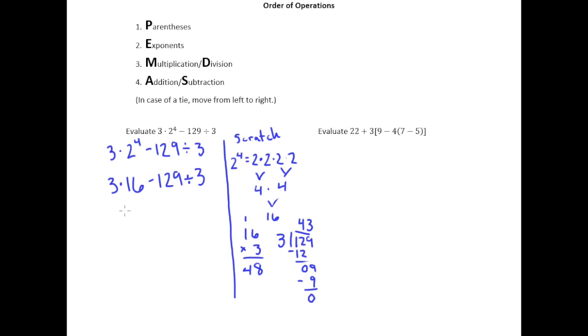So we can replace 3 times 16 with 48 and 129 divided by 3 with 43. And then we can subtract these. And we know that 48 minus 43 is 5.